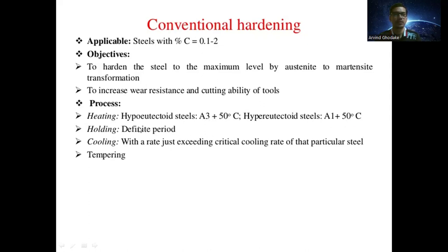The third step in conventional hardening is the cooling process, carried out at a rate just exceeding the critical cooling rate of the particular steel. The fourth step is the tempering process: after conventional hardening, the material is again heated to a certain temperature, held for a particular period of time, then cooled to room temperature so that retained austenite can be removed and the desired material properties can be achieved.